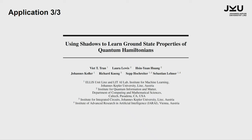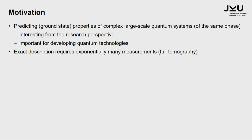That brings me to the last part of the talk. The last application is to use classical shadow measurements to learn ground state properties of quantum Hamiltonians. Predicting ground state properties of large-scale quantum systems is very interesting from a fundamental research perspective, but also very important for developing quantum technologies. As you know, the exact description requires exponentially many measurements, which would be a full tomography — this is a big overarching problem.